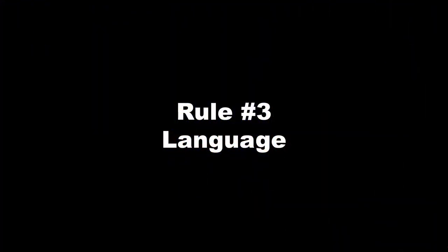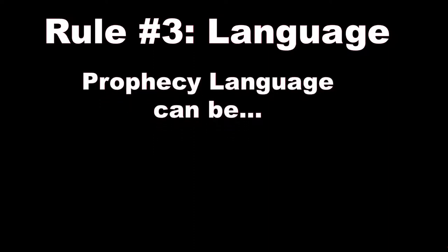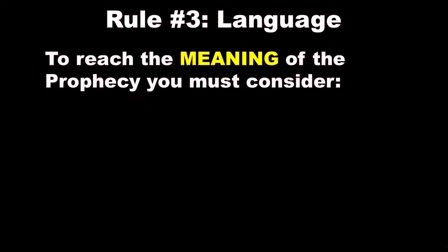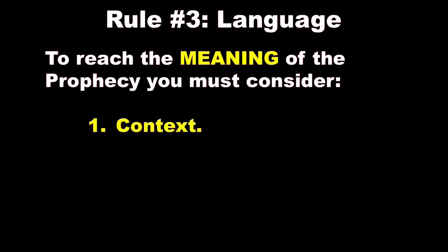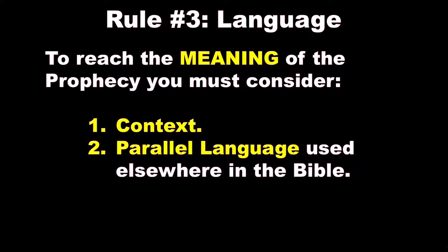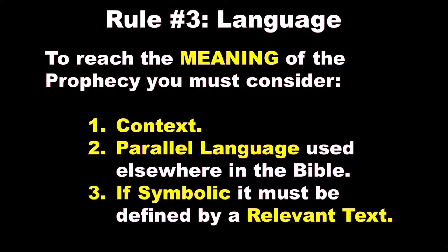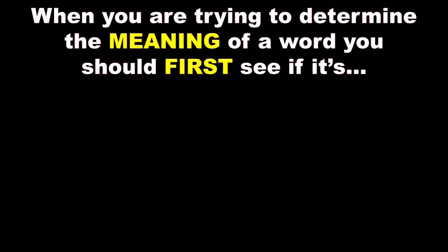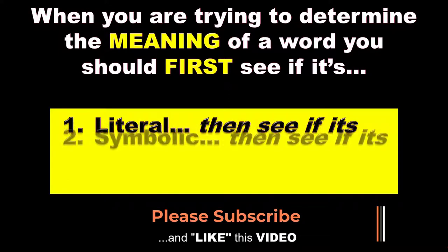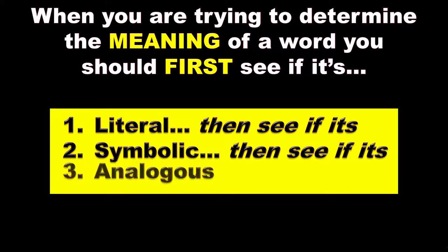Let's go on to rule three: language. Prophecy language can be literal, or symbolic, or analogous. It's important to reach the meaning of the prophecy that you are considering. First, you need to consider the content. Parallel language used somewhere else in the Bible can give you a clue. And if it's symbolic, it must be defined by a relevant text. When you're trying to determine the meaning of a word, you should first see if it's literal, then see if it's symbolic, and finally see if it's analogous.